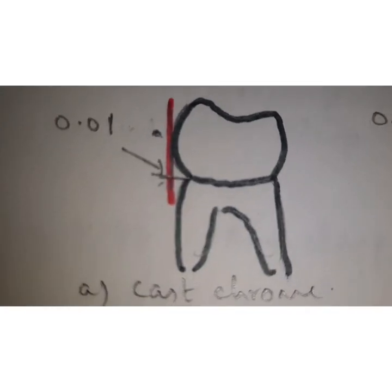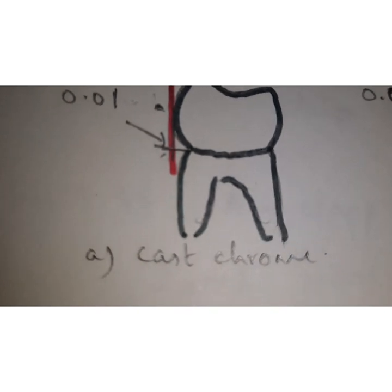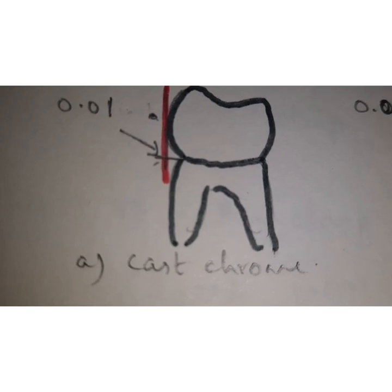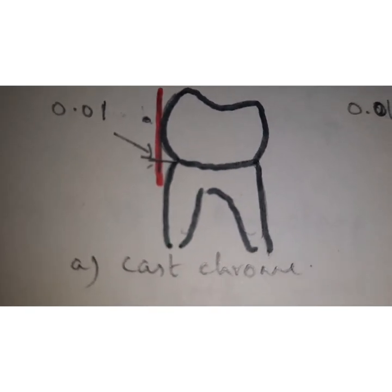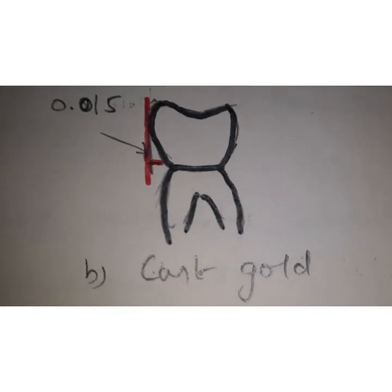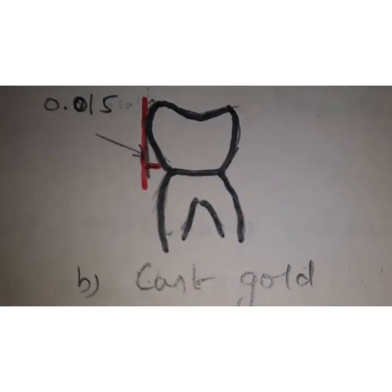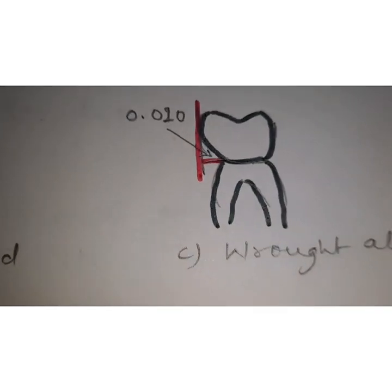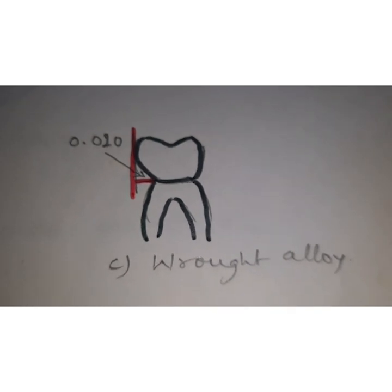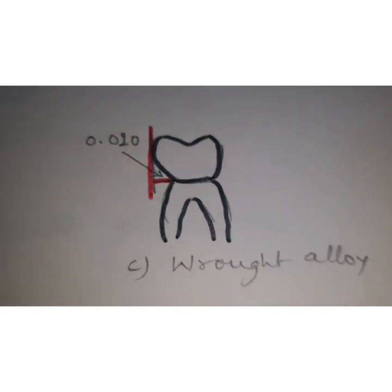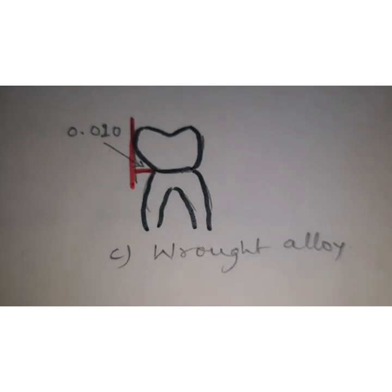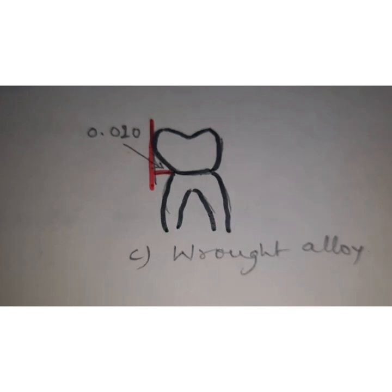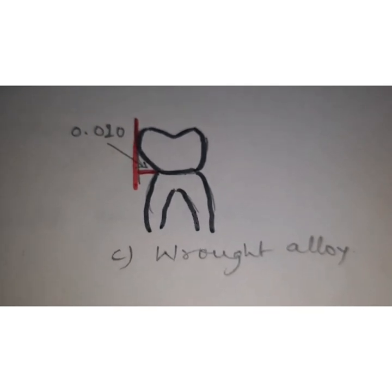The retentive undercut also depends on what type of alloy we are using. For a cast gold alloy, 0.015 inches of undercut is needed. For wrought alloys, 0.020 inches of undercut is needed, because wrought alloy is more flexible. Greater flexibility means lower modulus of elasticity, so deeper into the undercut that alloy can go.